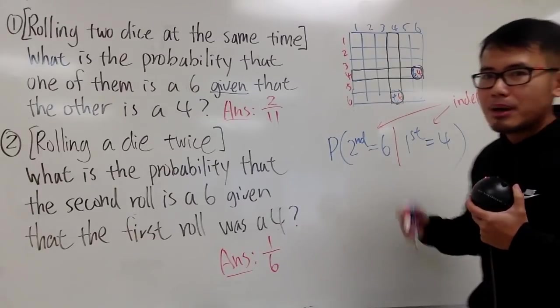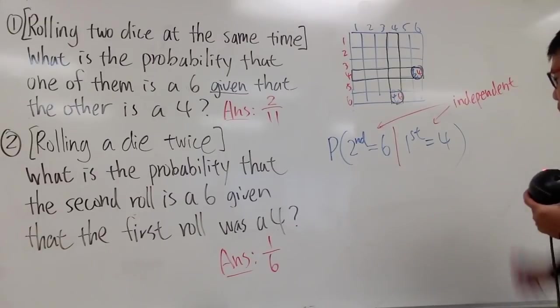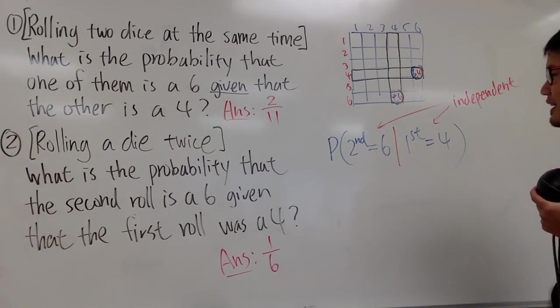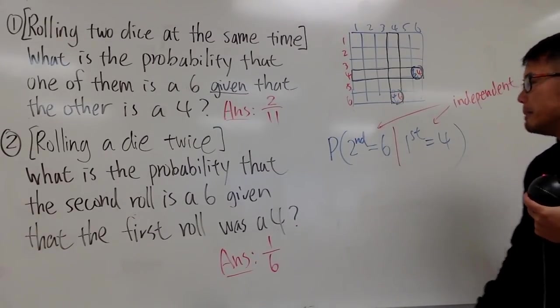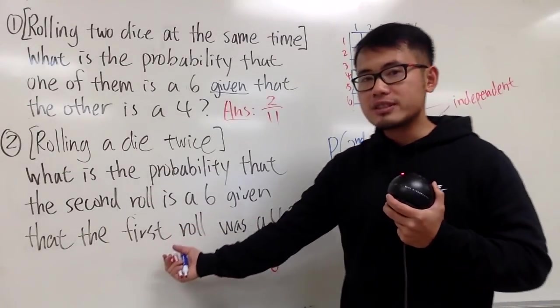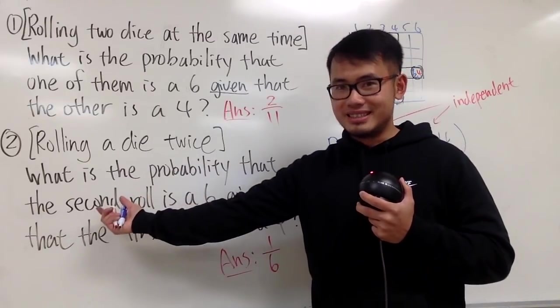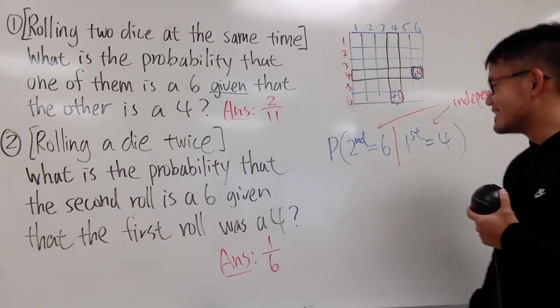I'm not talking about linearly independent, that's linear algebra or differential equation, I'm talking about probability. These two events are independent, meaning that when you get a 4 the first time, it has nothing to do with getting a 6 with the second roll.